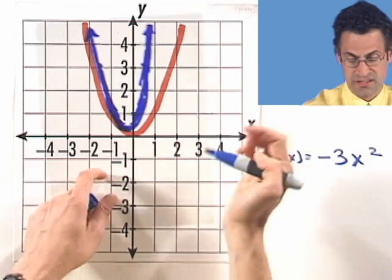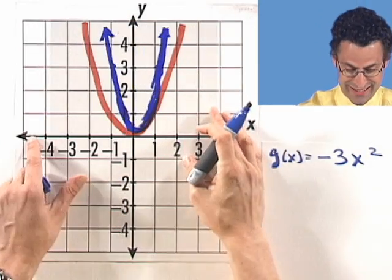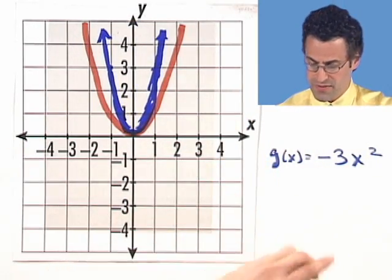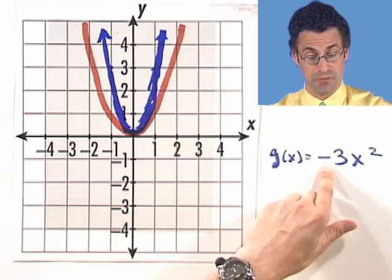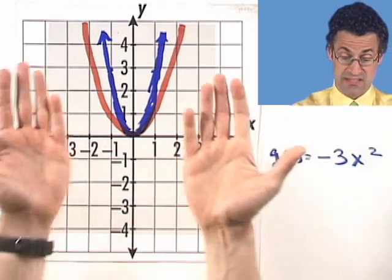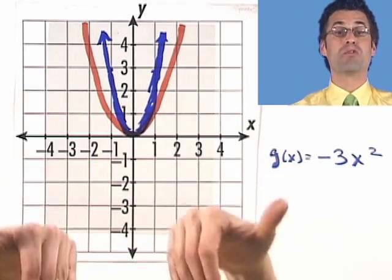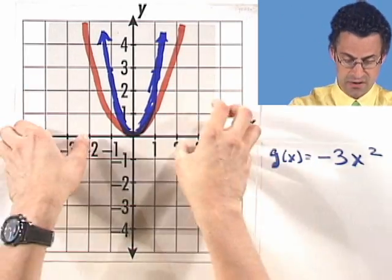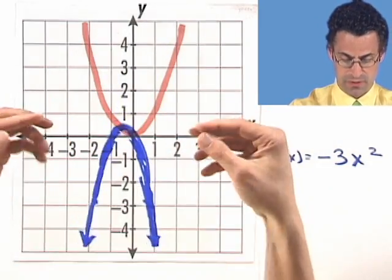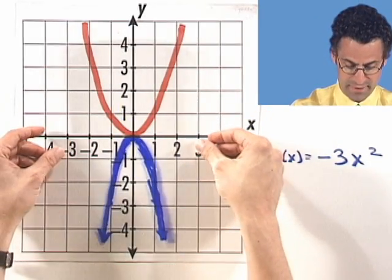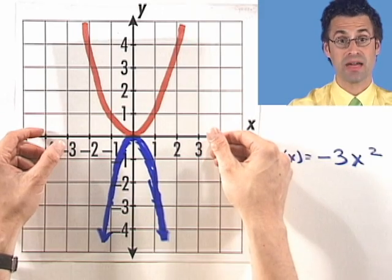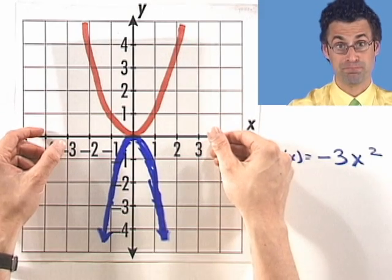There it is — you can see it's tighter. But we're not done yet, because remember there's that negative sign in front. So we have to take this and flip it over the x-axis, turning it from a happy-faced parabola to a very sad-faced parabola. And there's the answer — that is the graph of g of x equals negative 3x squared.